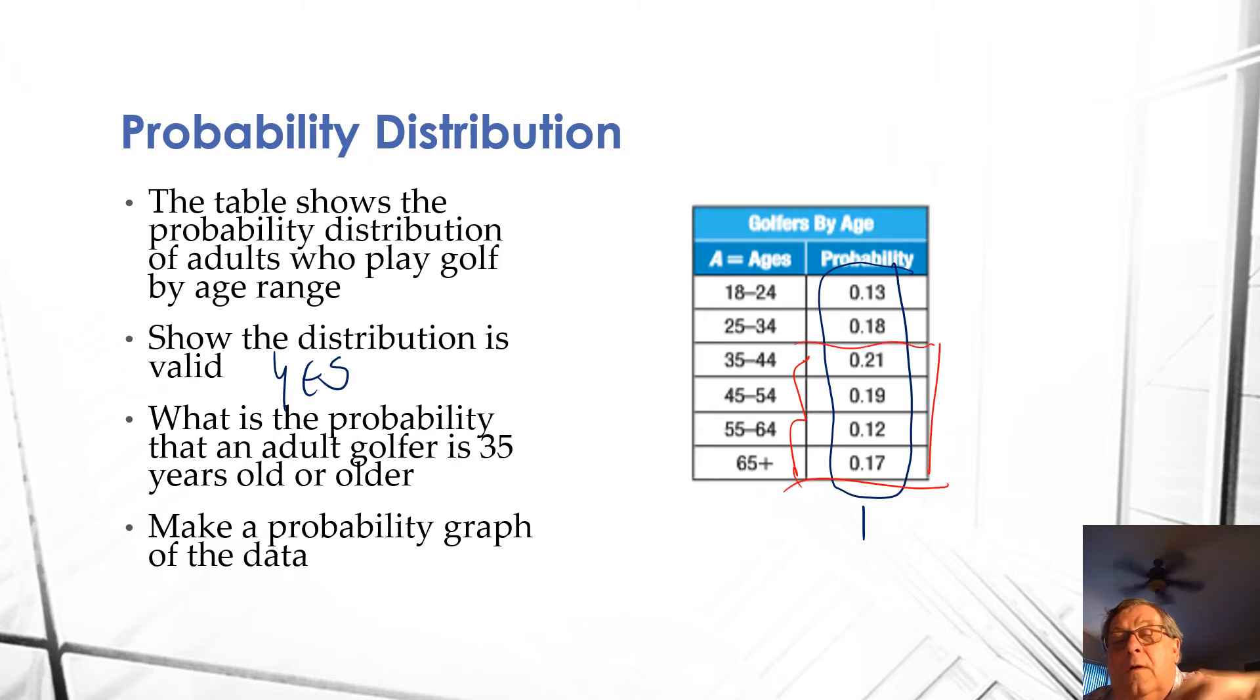Now, I could do that two ways. I could add all those up, or I could take 1 and subtract 0.13 and 0.18, but I'm just going to add all these up. So we've got 0.21 plus 0.19 plus 0.12 plus 0.17, and that equals 0.69 or 69%.